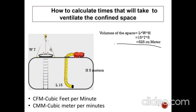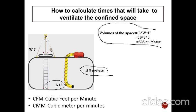So the volume of the space is length times width times height, which is given here. The length of the space is 15 meters, the height is 5 meters, and the width is 7 meters. So if we multiply 15 by 7 by 5, the answer is 525 cubic meters.